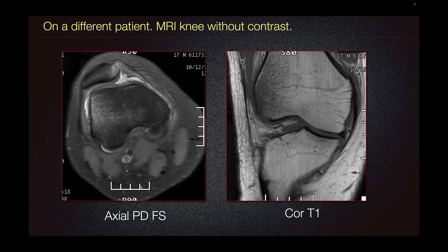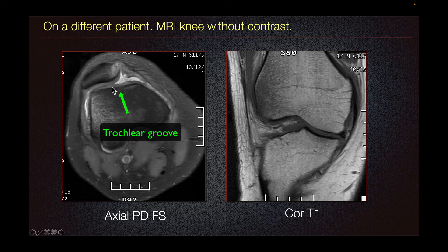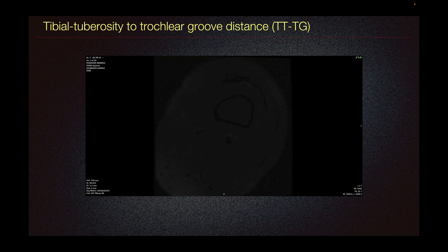Measurement of trochlear dysplasia is very challenging to assess because of differences in patient positioning. The general concept is to determine if the trochlea is relatively shallow, which could be seen in this patient.